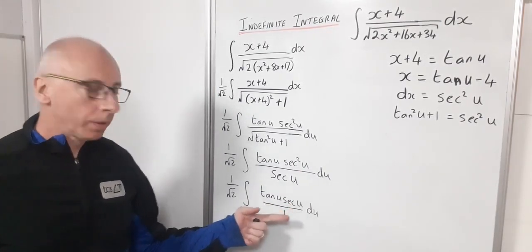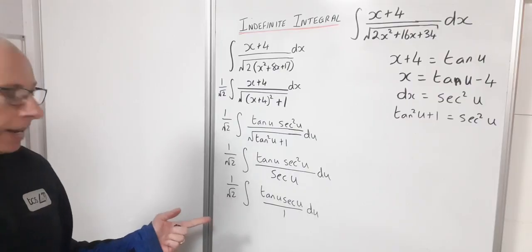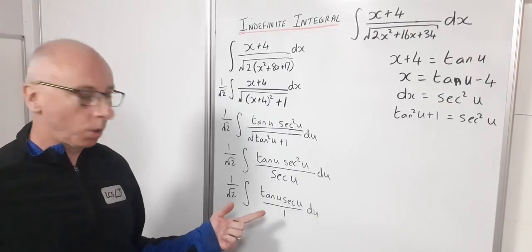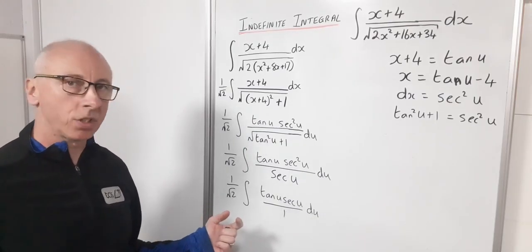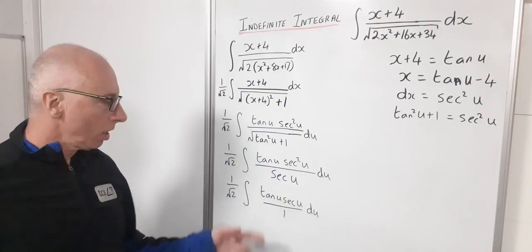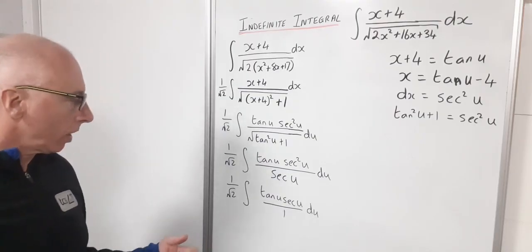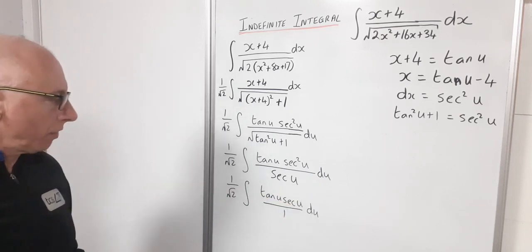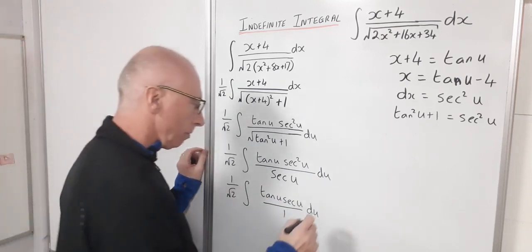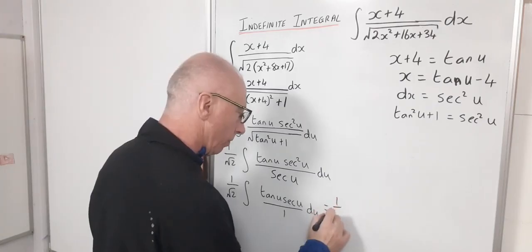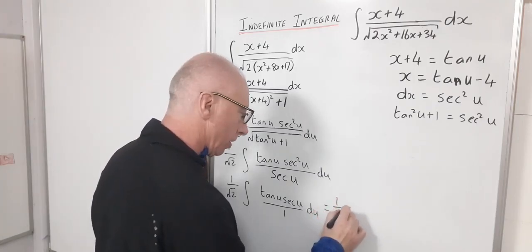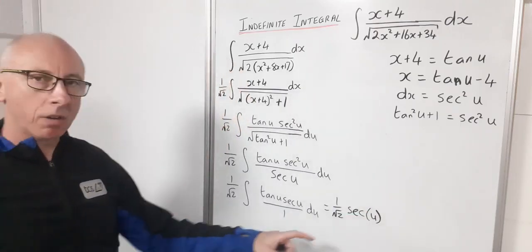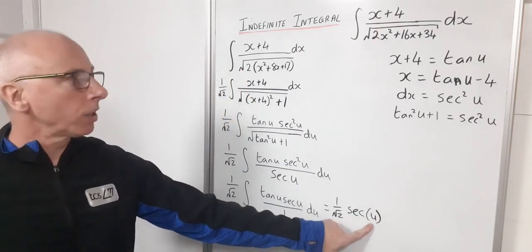So now tangent u secant u. Now I'm not going to integrate that because I know that the derivative of secant of u is going to give me tangent u secant u. So by the fundamental theorem of calculus if I integrate that I will get back to my derivative of secant. So then this is simply 1 over root 2 secant of u and then the plus c. But we can't go there just yet because I've got to put my u back in.